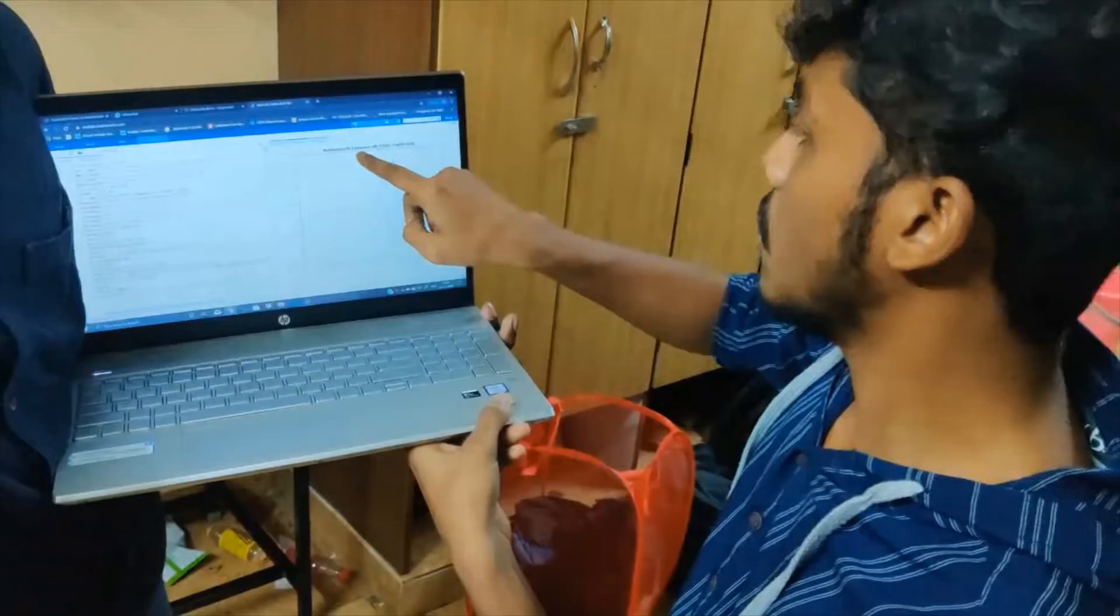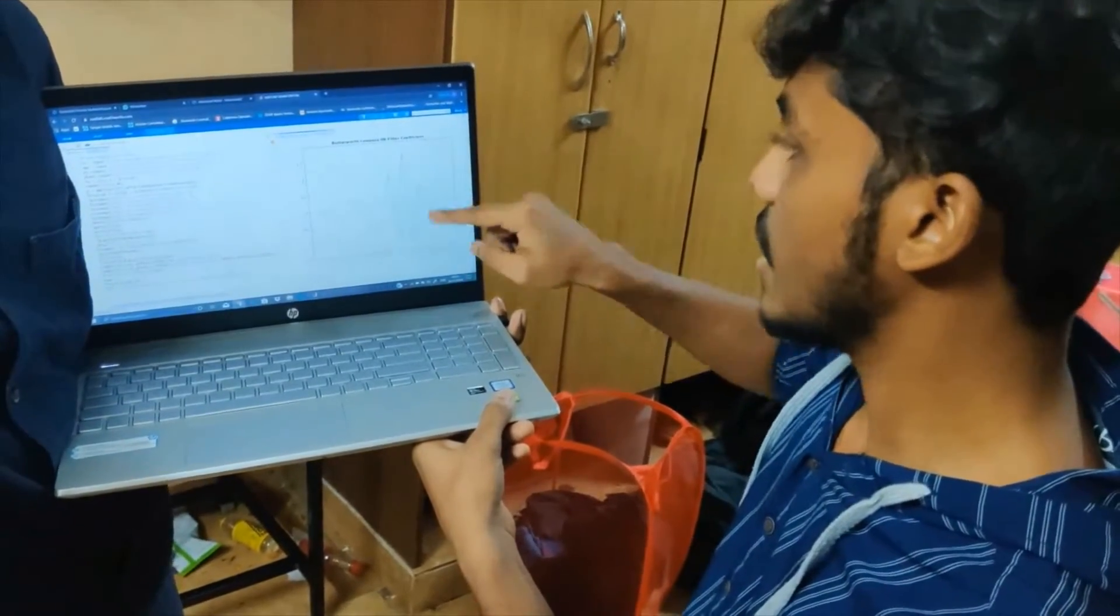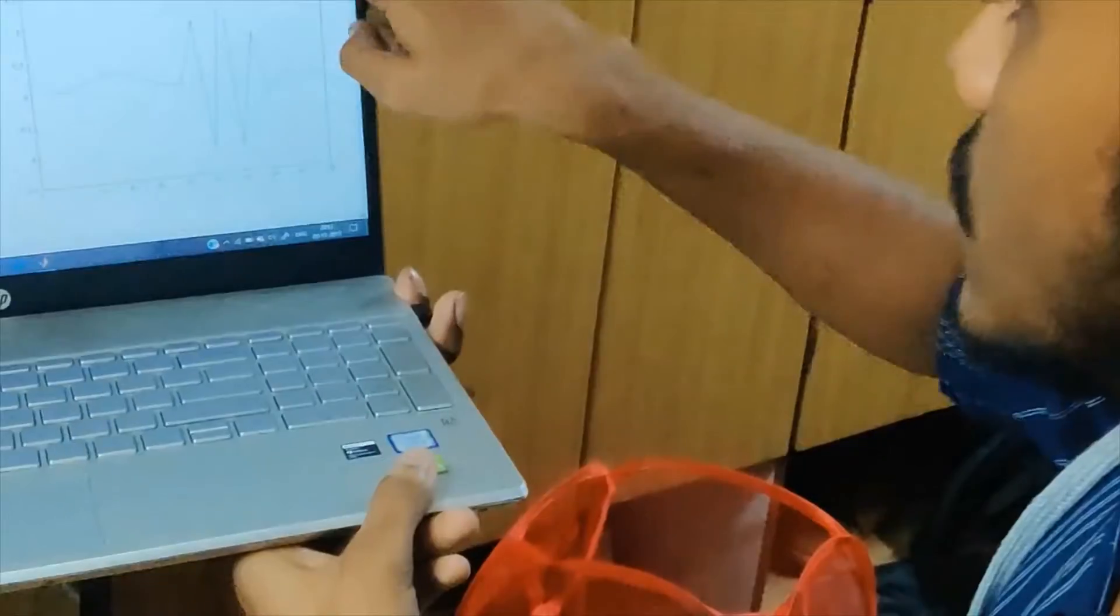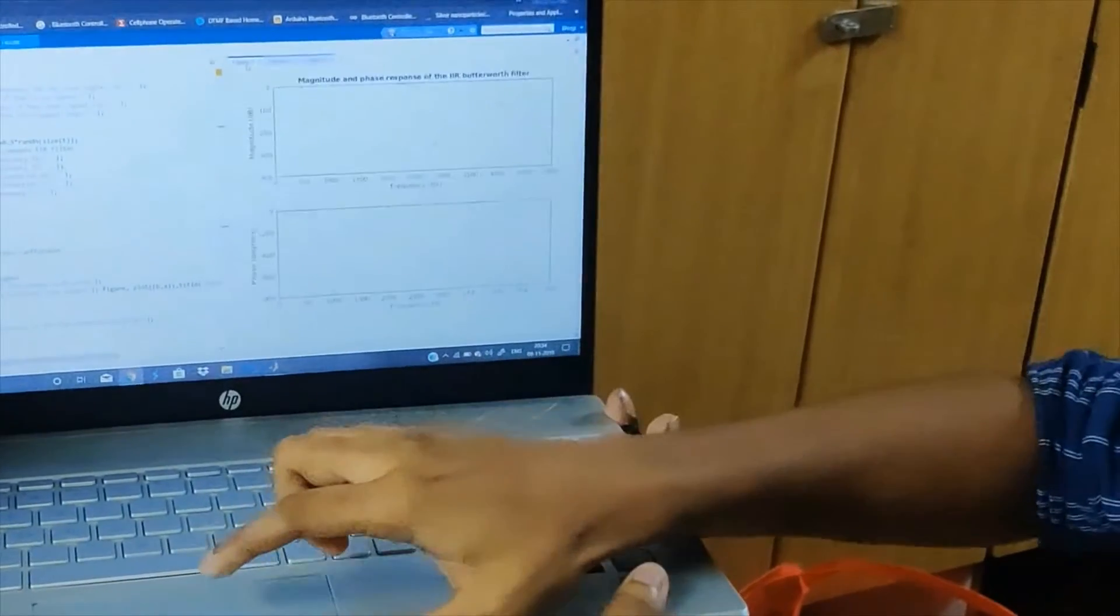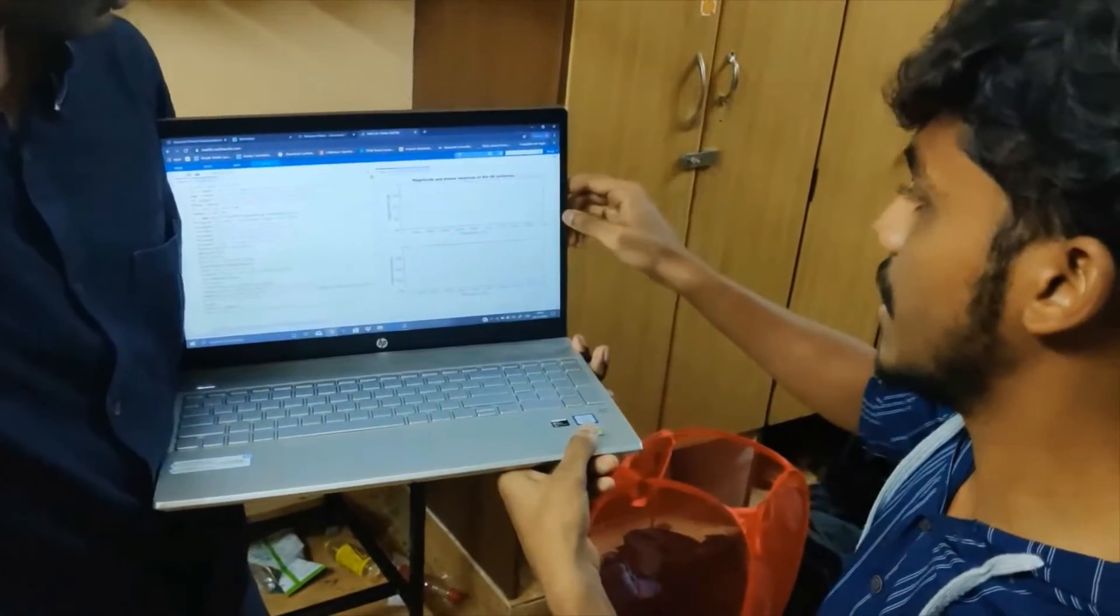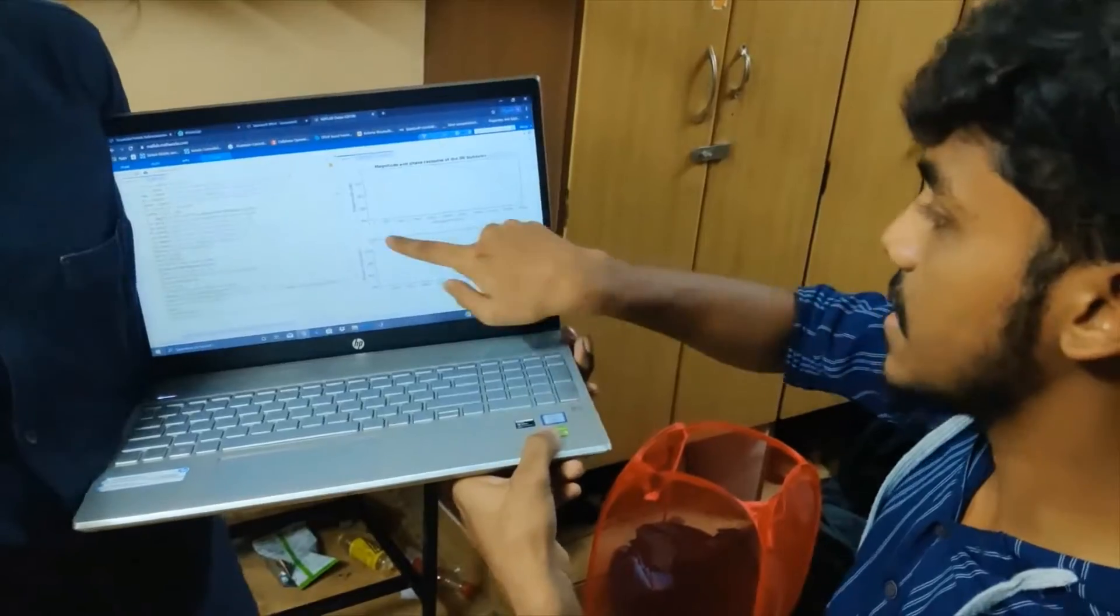It is the Butterworth low pass IIR filter coefficient. We can see how the graph goes. And here is the magnitude and phase response of the IIR Butterworth filter.